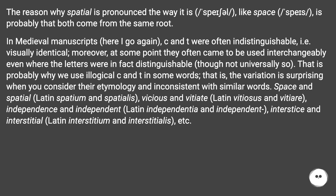In medieval manuscripts, C and T were often indistinguishable, i.e. visually identical. Moreover, at some point they often came to be used interchangeably even where the letters were in fact distinguishable, though not universally so. That is probably why we use illogical C and T in some words — the variation is surprising when you consider their etymology and inconsistent with similar words.